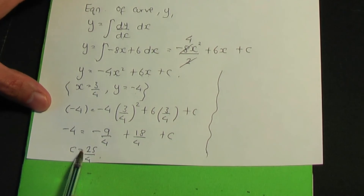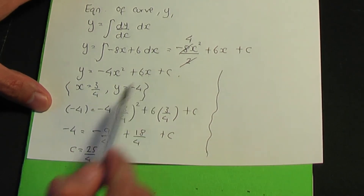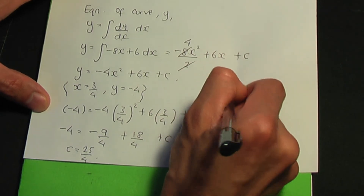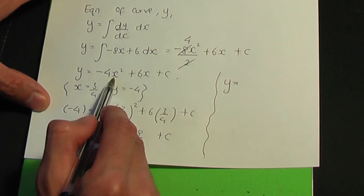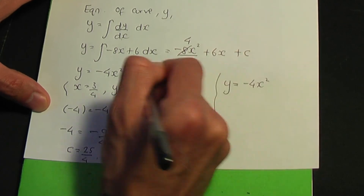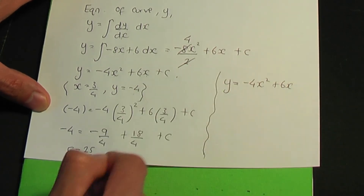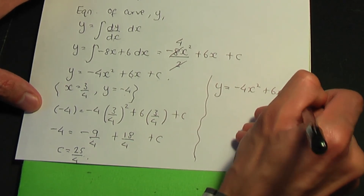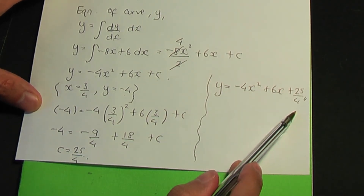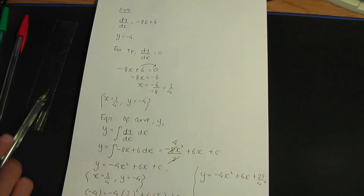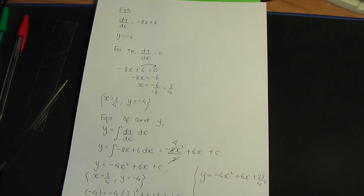Replacing c in the general solution with 25 over 4 gives the particular solution: y equals minus 4x squared plus 6x plus 25 over 4. This is the equation of the curve for example 4, and that completes this video. I hope you found it helpful. A like is very much appreciated — do plenty of practice and I hope to see you again.